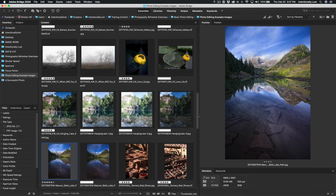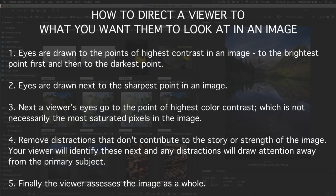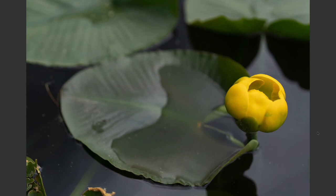Just a couple more examples here. Hopefully you're getting the point about those five points that we started with — where I'm talking about directing a viewer to the brightest point in an image, then the darkest point, then the sharpest points, and then to the points of color contrast. That's the order that we kind of want to edit in. Now here's a good example: I took a photo where I was really looking at these lilies on lily pads in a lake, trying to get some good shallow depth of field photos. I didn't know what I wanted to do with this, so I played around with it.